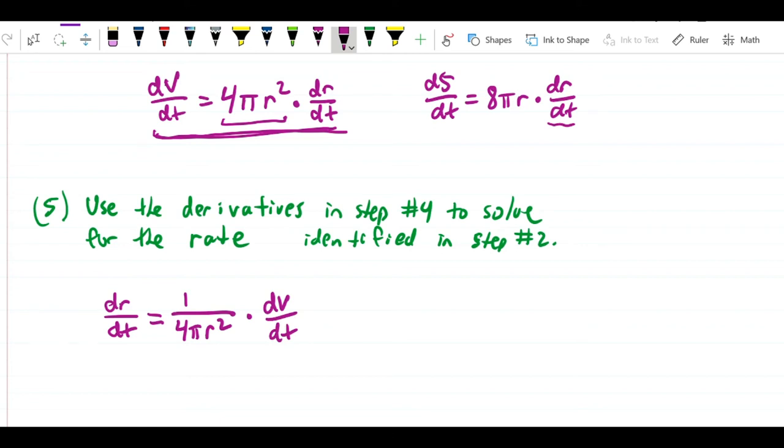With that fact, I can now rewrite this equation, this one here. dS/dt is equal to 8 pi r dr/dt, but I can substitute in this equation for dr/dt. So I'm simply going to replace this with 1 over 4 pi r squared dV/dt, where this is going to play the role of dr/dt, like that.